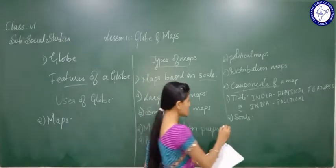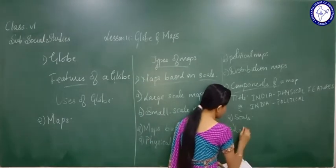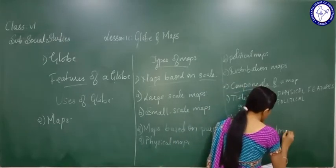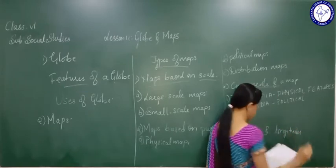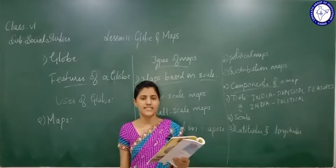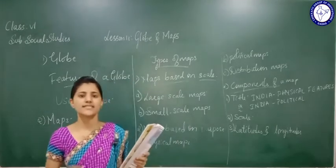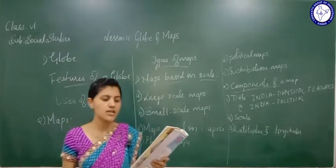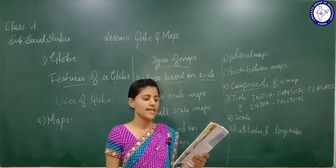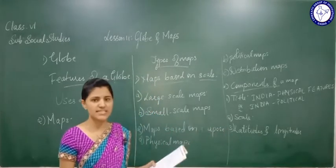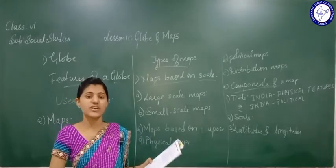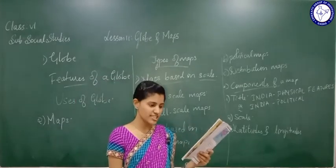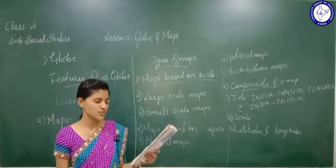Next comes latitudes and longitudes. They are a grid of imaginary lines that help us to find the location, distance, and direction of places on the map. These latitudes and longitudes are imaginary lines drawn for the purpose of locating places, finding distance, and finding direction.